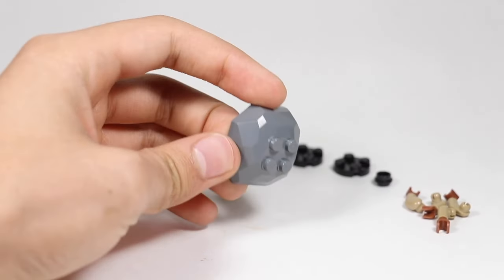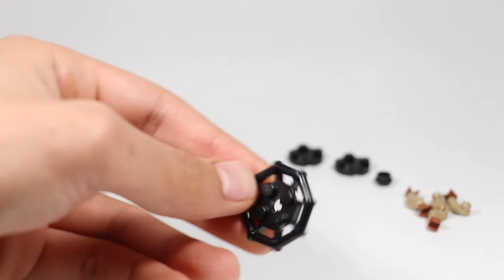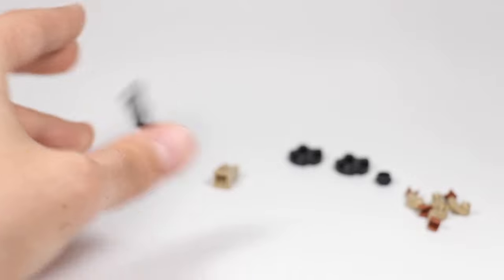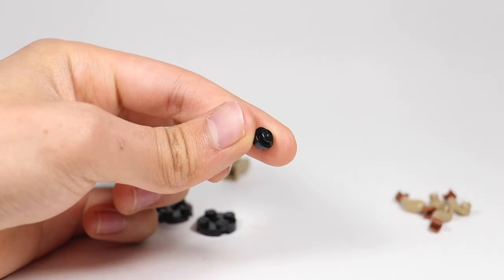So straight off the bat, you will need the following parts. You'll need this boulder. I like that boulder, that is a nice boulder. And also this 2x2 modified plate with bars surrounding it. In addition, you'll need two 2x2 circular plates and a stud.